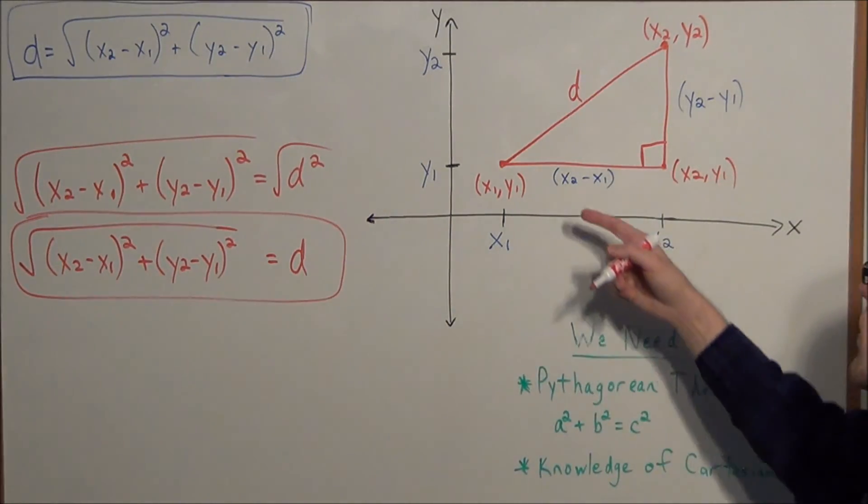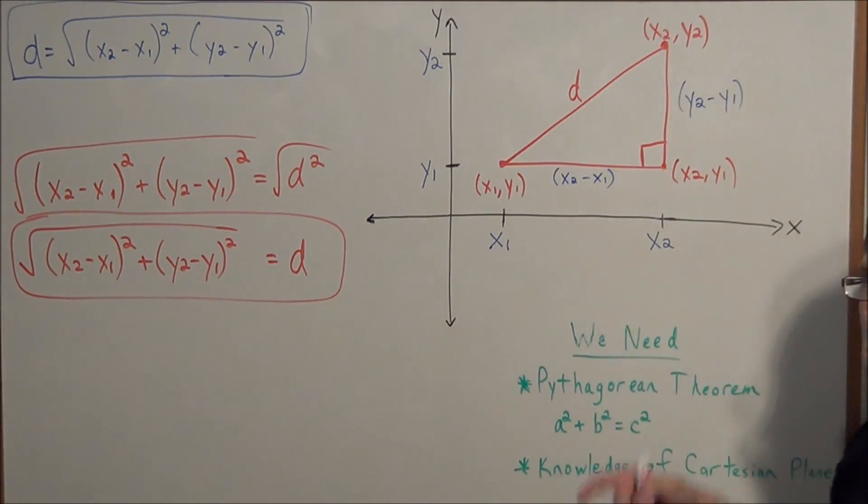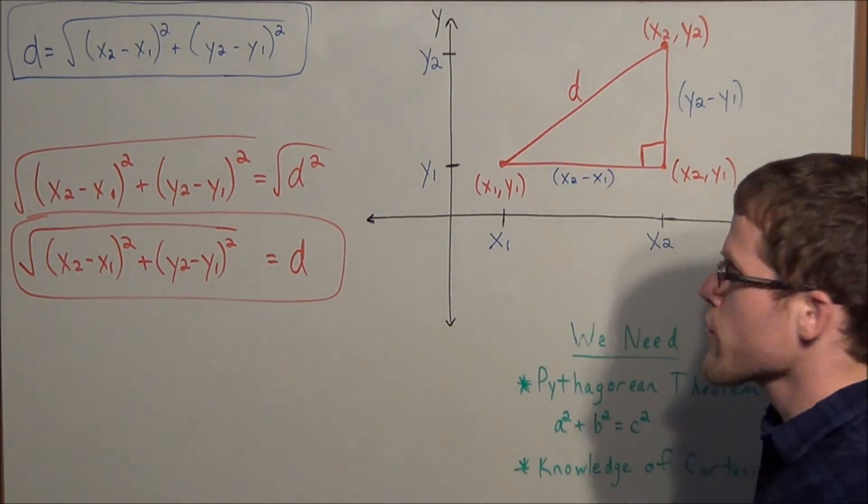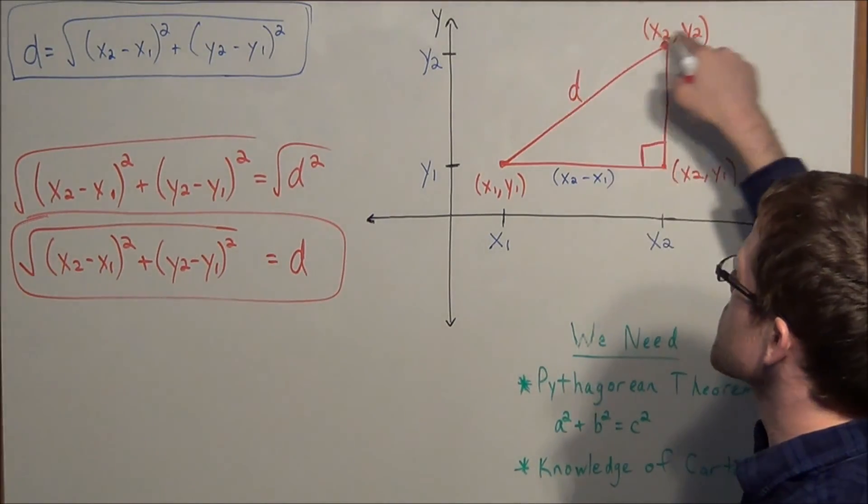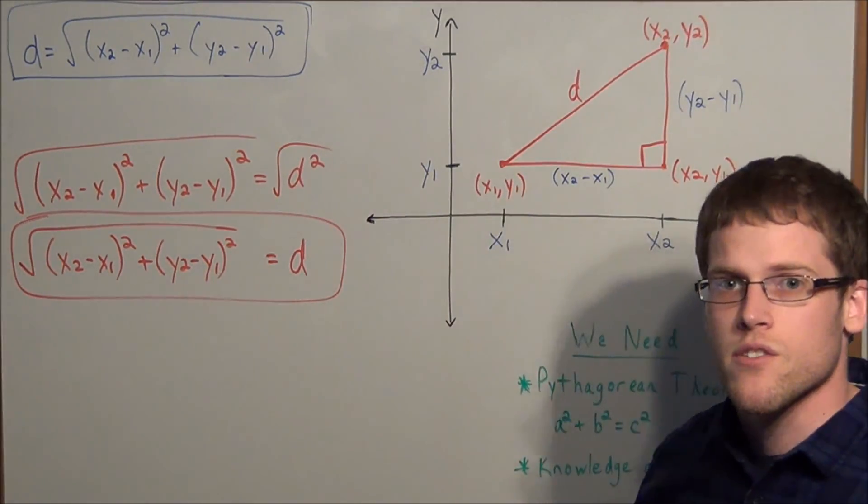Otherwise the second way to find the distance between two points on the Cartesian plane would be to simply sketch a right triangle. So that just shows you have a graphical way to solve distance problems and you also have an algebraic way to solve distance problems.